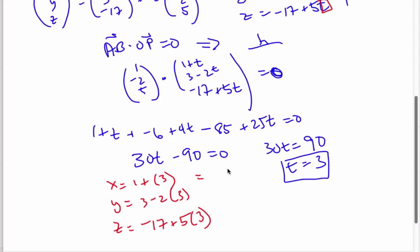which gives me 4 minus 3 minus 2. And so my point P is 4 minus 3 minus 2.